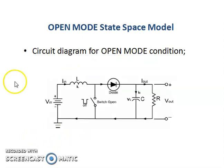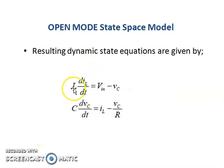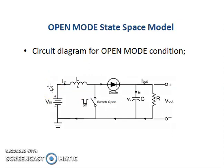Similarly, we look at the boost converter in open mode, and you can see from here that the active switch is now open, and by implication, the passive switch will be closed. So we have a loop here, then we have another loop here. So we analyze the system based on this loop and this other loop. So we have this resulting dynamic state equations from the open mode circuit.